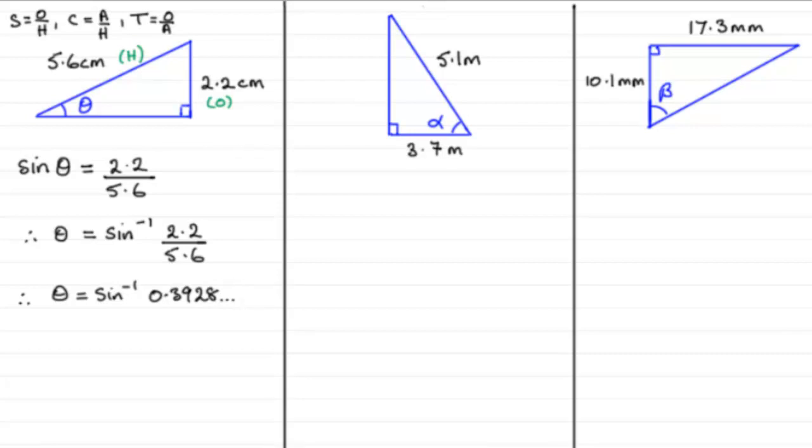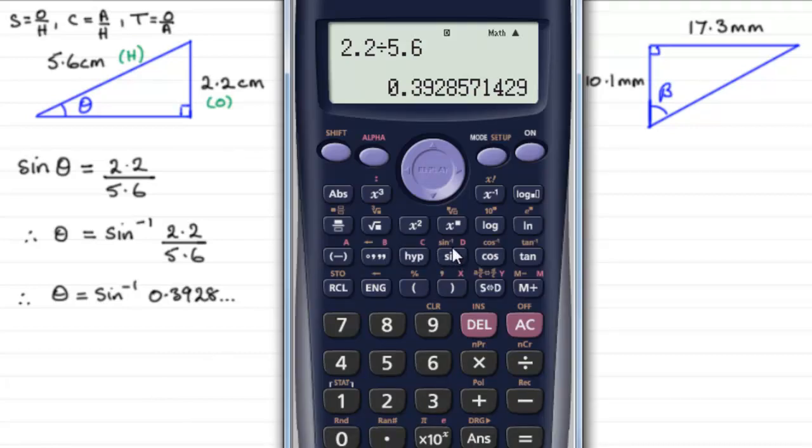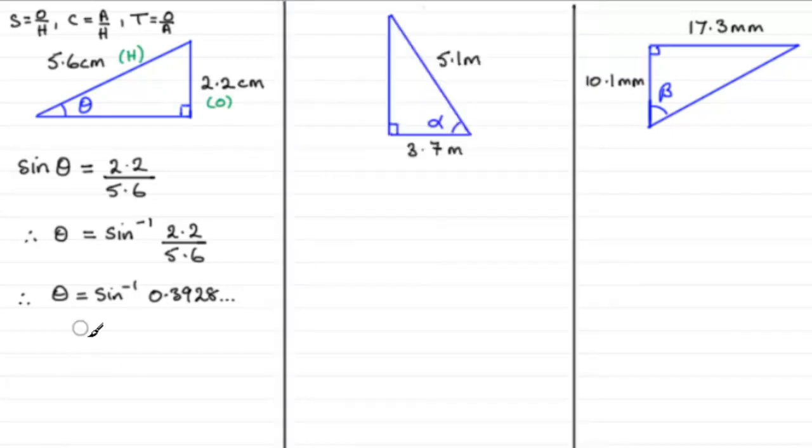Now, in order to work this out, we just now need to take the inverse sine, that's on this calculator, just written above the sine here. So we need to do shift, sine, and then we've got the inverse sine. And you can either type this value in, or you could just press answer, it remembers the last thing that we got. Press equals, and we've got that it's 23.13 odd degrees. So we'll just write that in here, that this theta then equals 23.132 and so on.